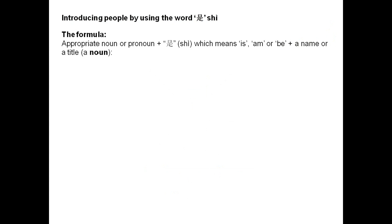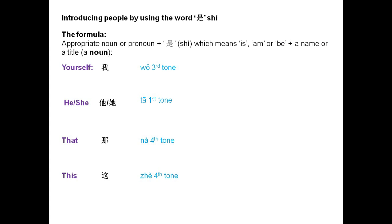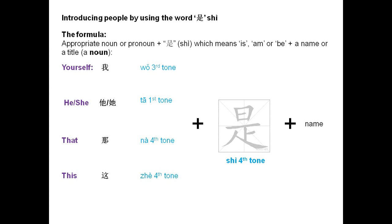The word structure or the formula for using the word 是 when introducing people is the following: first, use the appropriate noun or pronoun followed by the word 是, which means 'is', 'am', or 'be', followed by a name, a title, or another noun. You can use any of these pronouns followed by 是 and add a name, noun, or title at the end.